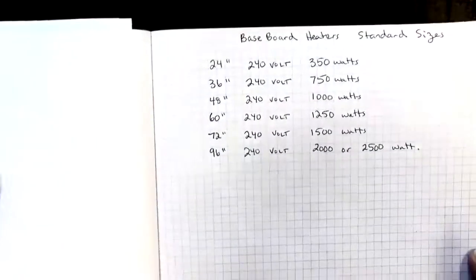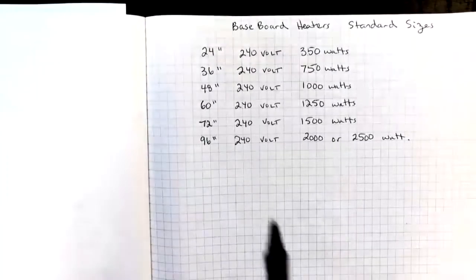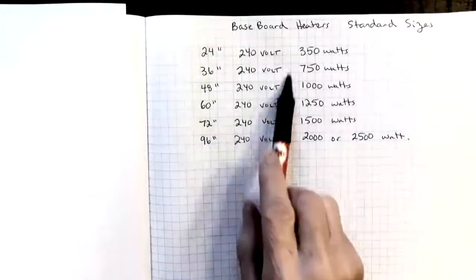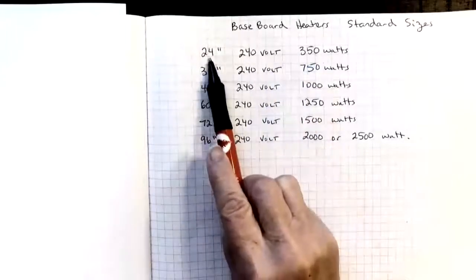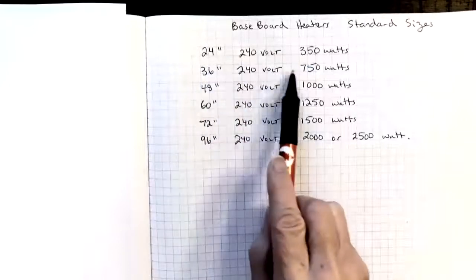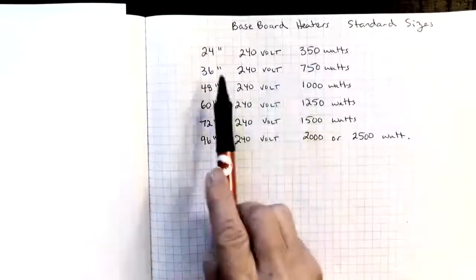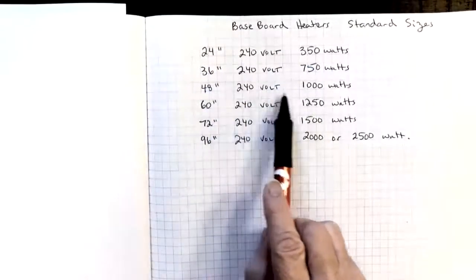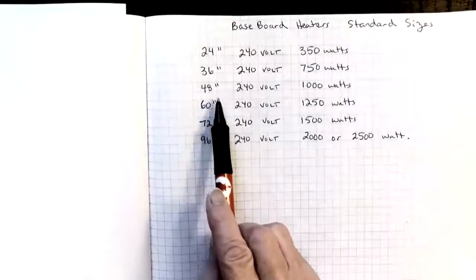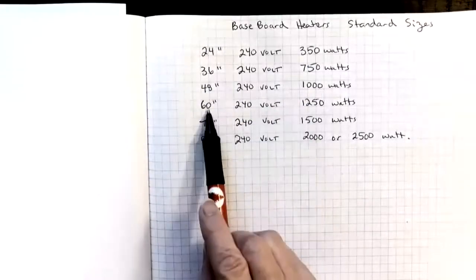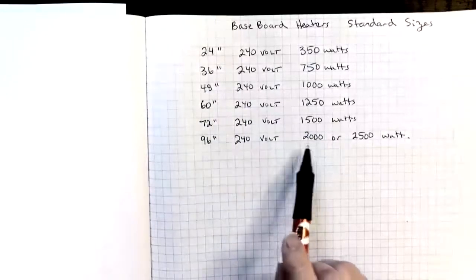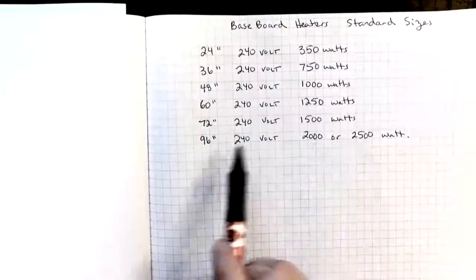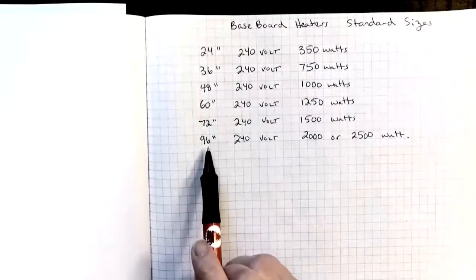First of all, of note is the actual length of baseboard heaters. These are standard sizes and if we look all of these were 240 volts. So a 350 watt baseboard heater typically is 24 inches long. A 750 watt baseboard heater is 36 inches long. 1000 watt is 48 inches long. 1250 is 60 inches long. 1500 is 72 inches long and a 2000 or 2500 watt is 96 inches long.